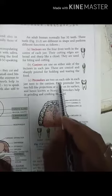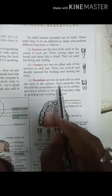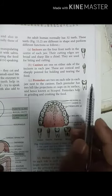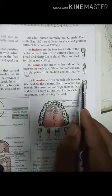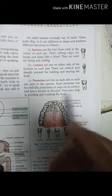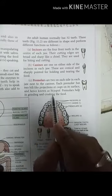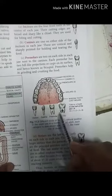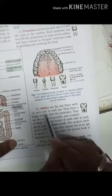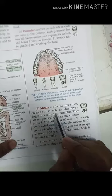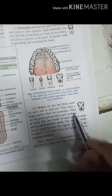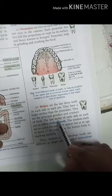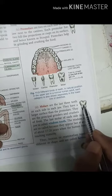Premolars are two on each side in each jaw, next to the canines. Each premolar has two hill-like projections or cusps on its surface, hence known as bicuspid. Two cusps, two roots. Premolars help in grinding and crushing the food. Molars are the last three teeth on each side in each jaw. They have a larger surface than the premolars. They are the principal grinders and crushers of food. The last molar of each side in each jaw is called the wisdom teeth.